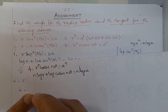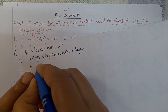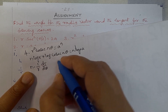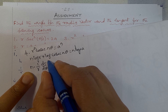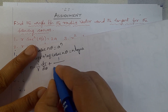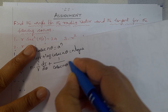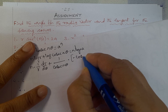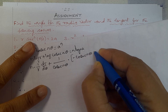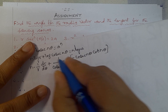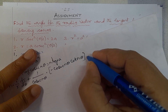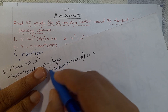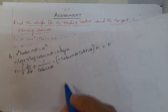Next, differentiation with respect to θ: n·(1/R)·(dR/dθ) + differentiation of log(cosec(nθ)) = 0. The differentiation of log(cosec(nθ)) is 1/(cosec(nθ)) times -cosec(nθ)·cot(nθ) times n. The differentiation of n·log a with respect to θ is 0 because a is constant.